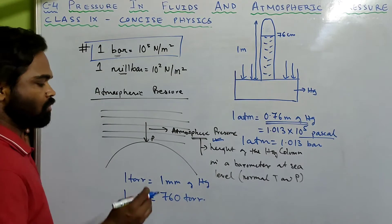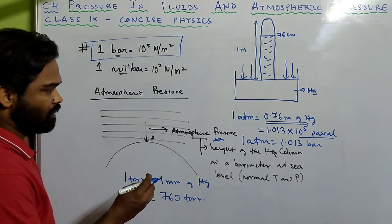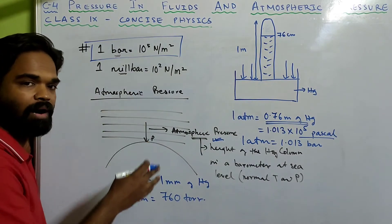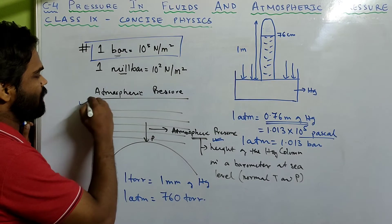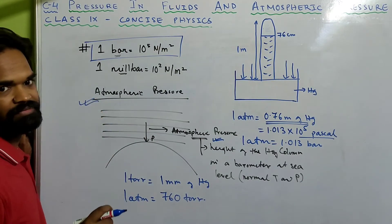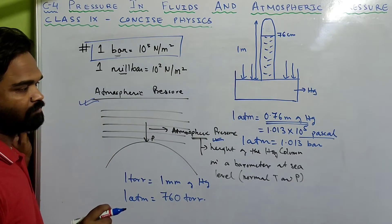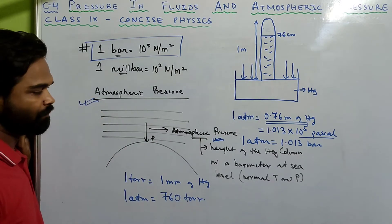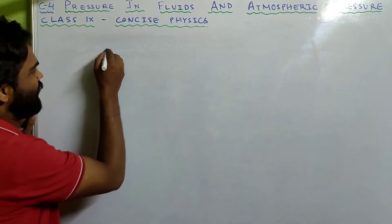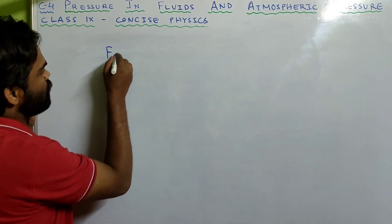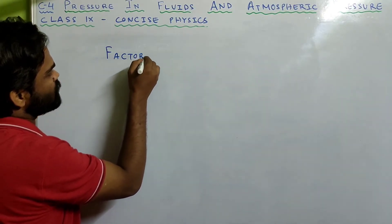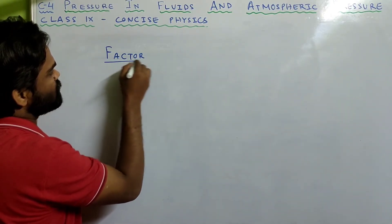So tor, atmosphere, bar, and millibar are all units used to measure atmospheric pressure. Now let us see what are the factors on which pressure depends.